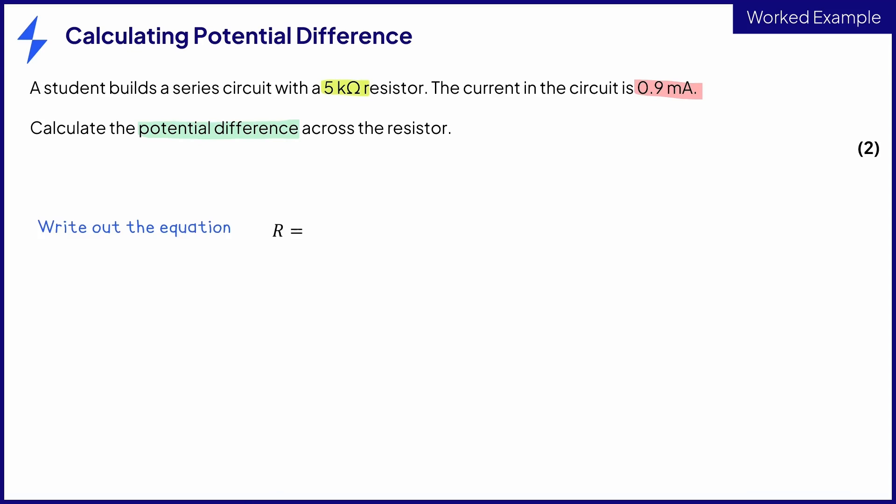So first we always write out the equation. We need to rearrange here to make potential difference or V the subject.